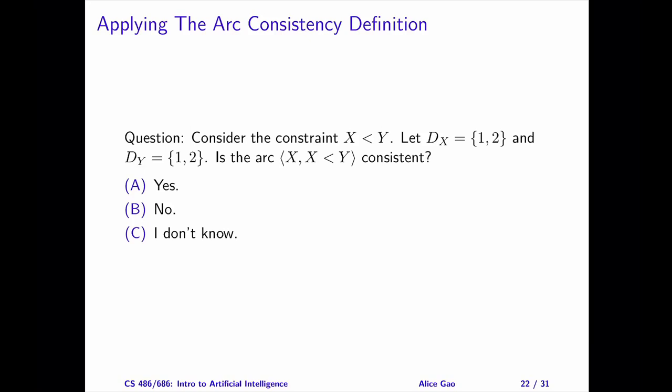Let's look at an example of applying the arc consistency definition. Consider the constraint, x is less than y. Each domain contains 1 and 2. Is the arc with x as the primary variable consistent? Pause the video and choose an answer. Then, keep watching.